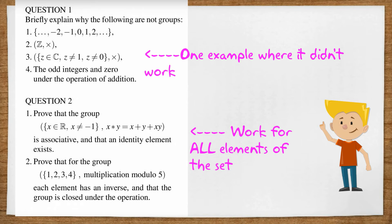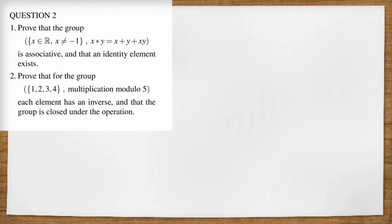In question one we could show that a group rule didn't work by just finding one example where it didn't work. But in question two we're going to have to work harder because we're going to have to show that the rules work for all elements of the set. I've picked interesting situations here because I want to make the point that mathematical groups are much more than just the real numbers and complex numbers. In this first one we've got all the reals except negative one and we've got this funny operation. It's the combination of addition and multiplication.